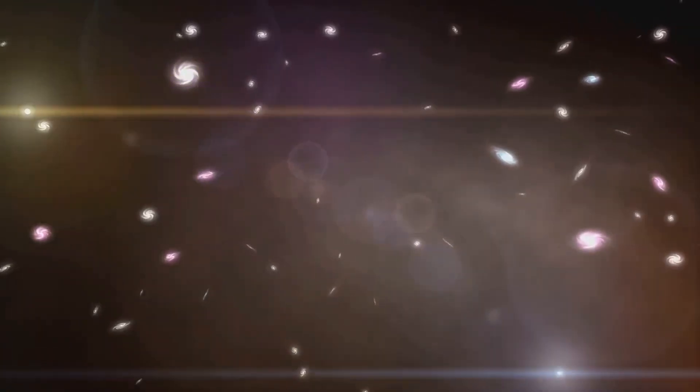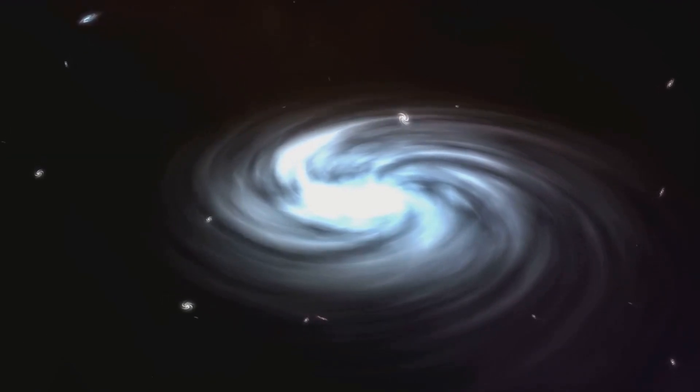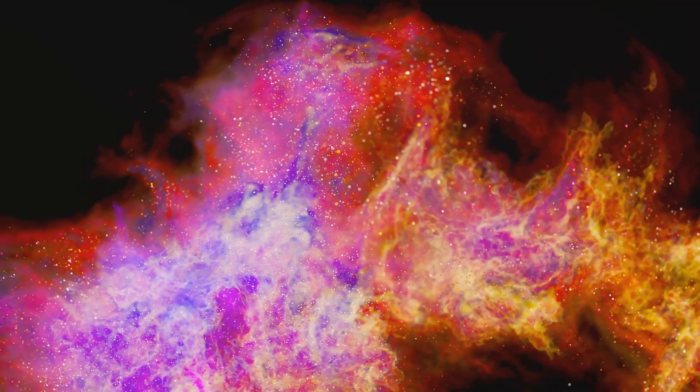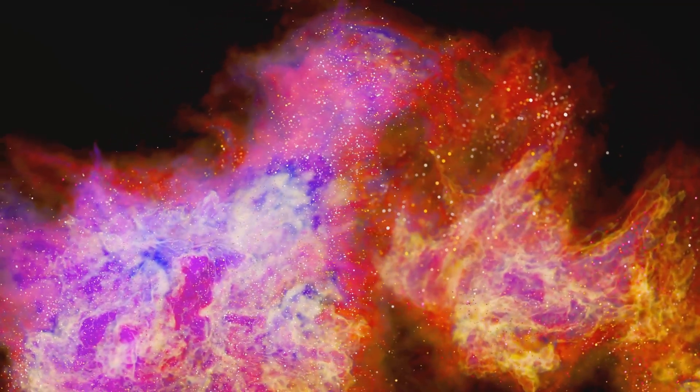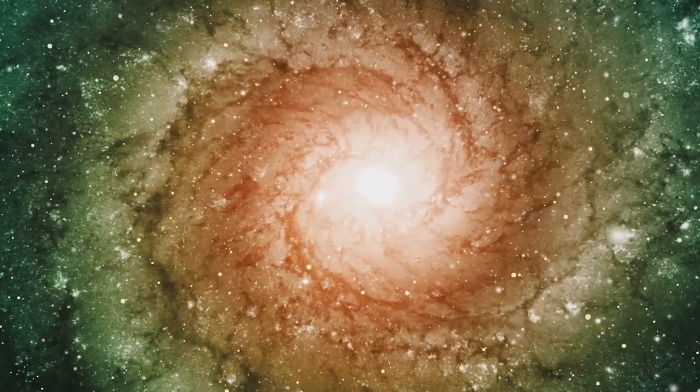Tiny fluctuations in the dense, hot universe began to grow, eventually forming galaxies, stars, and everything we see around us. This process, known as structure formation, has shaped the universe into the intricate cosmic web we see today, composed of galaxies and vast voids.